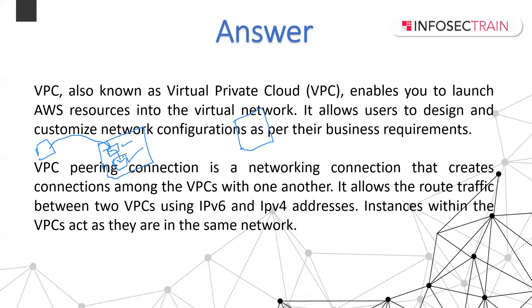Instances within peered VPCs act as if they are on the same network. For example, if you have two VPCs each with instances, using a VPC peering connection allows these two VPCs to easily communicate with each other — instances can share data as if they are on the same VPC. VPC peering allows routing traffic between VPCs.